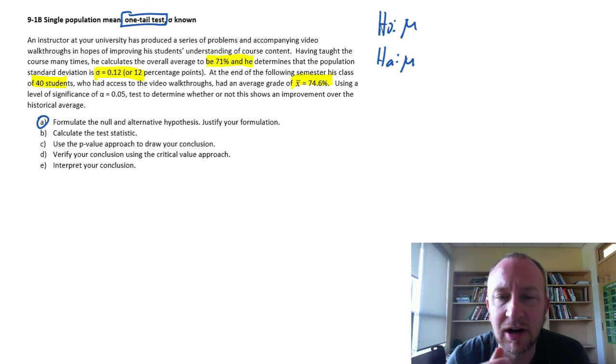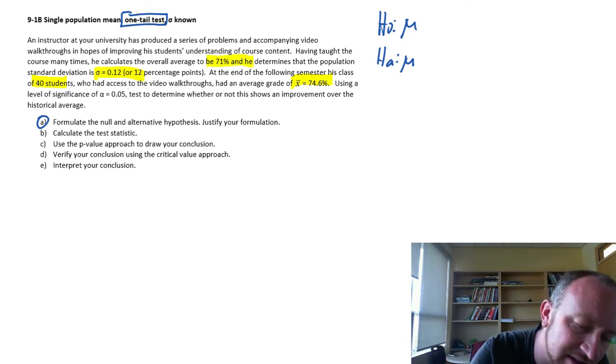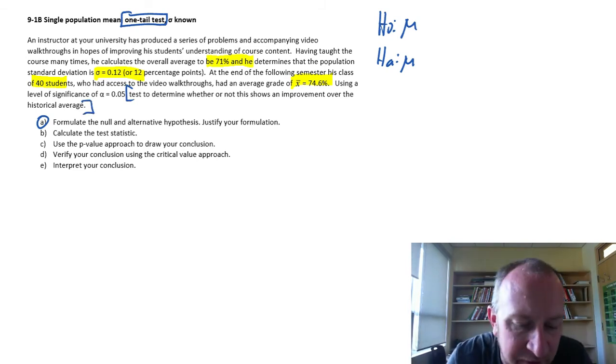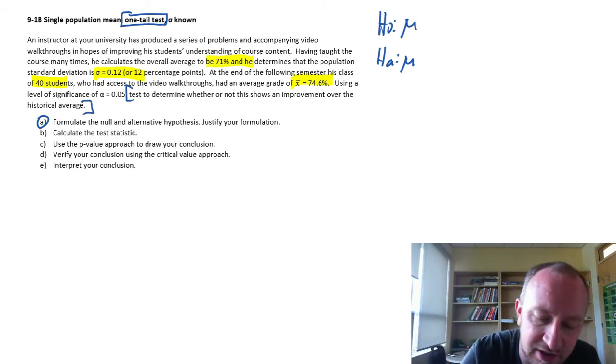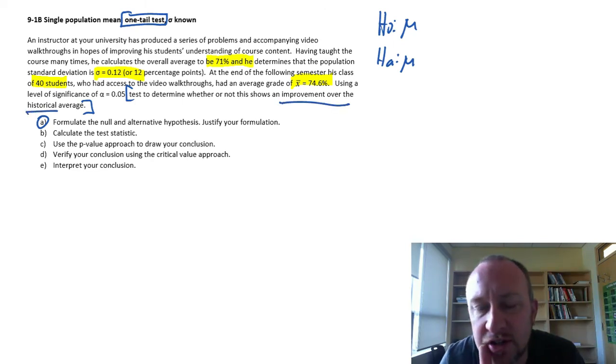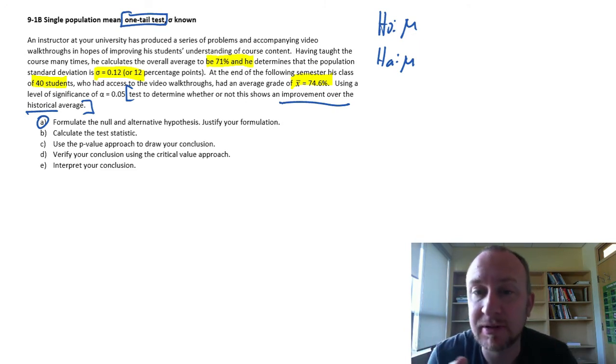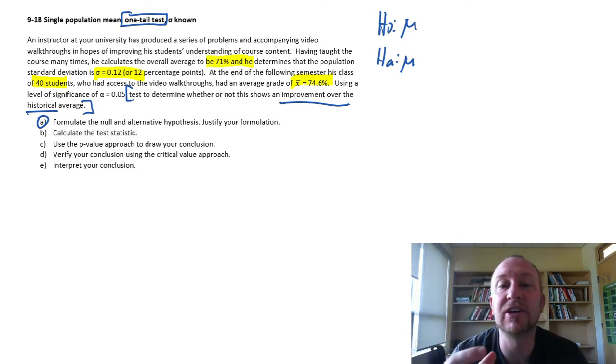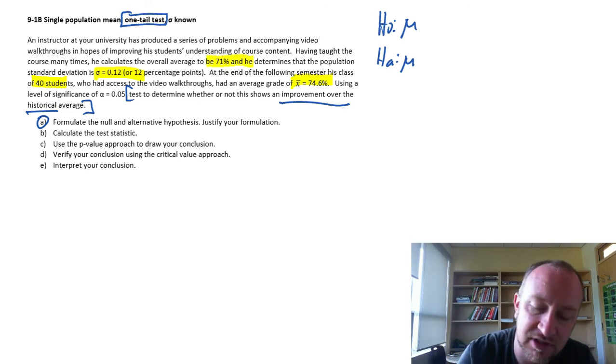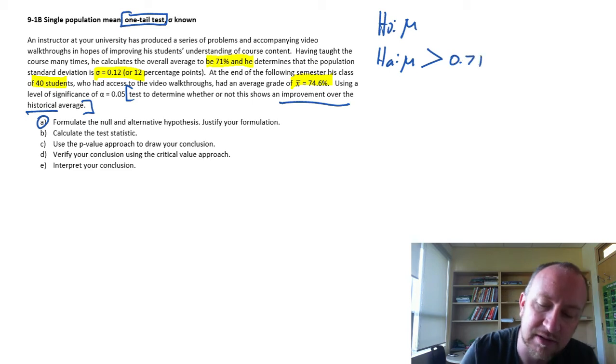The challenge here is to determine whether this is a lower tail or upper tail test. There's always clues in the problem somewhere. The clue is right in that last sentence: test to determine whether or not this shows an improvement over the historical average. So I want to see if the new population mean is greater than the historical average.